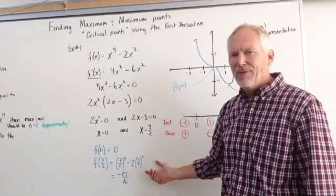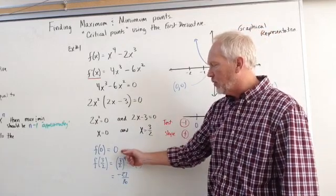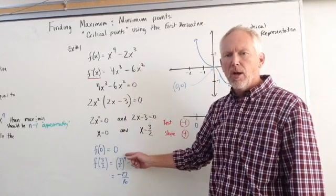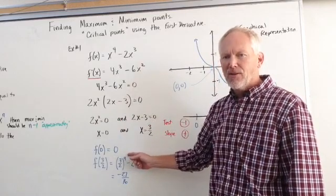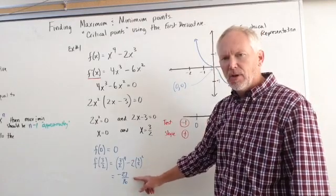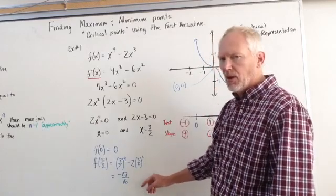If I want to know what the y values are, then I simply plug it back in. That one at zero, so we get a y value of zero. So we know we have one max or minimum at zero, zero. Plug in three halves, we get negative 27 over 16, which is about 1.23 something.